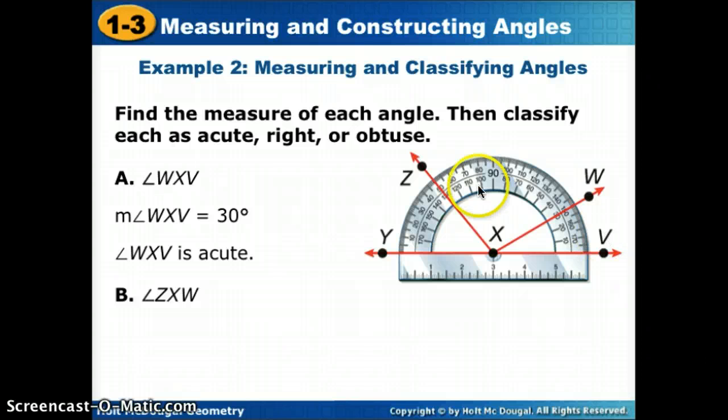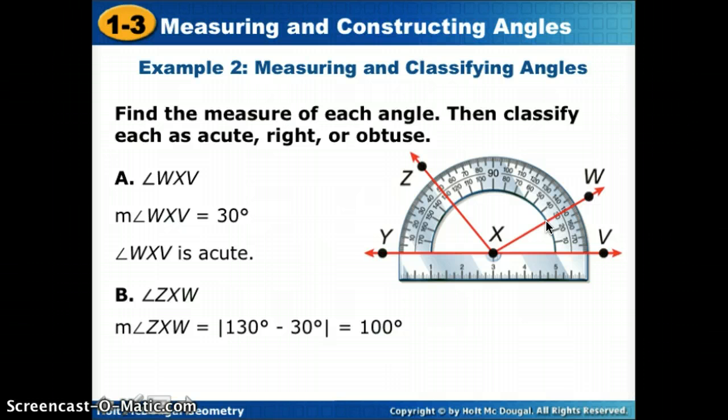Let's try another one. ZXW, notice neither of those are on zero. So we're going to have to take where one spot is minus another. If we want to start where is ray XZ, I see that ray XZ on the bottom is at 130 degrees. So I'm going to take 130 minus where XW is at 30 and get 100.